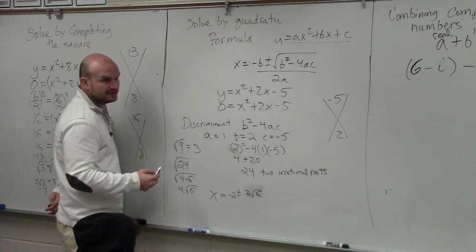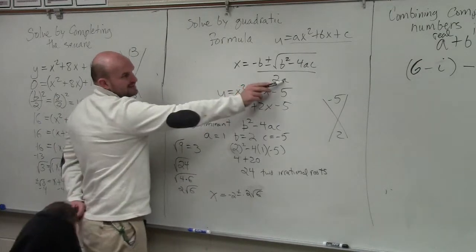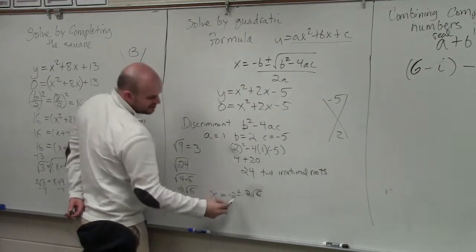Divided by 2 times a. Well, a is 1, so it's just going to be 2. Now, that is fine. That is the answer, but it's not simplified.